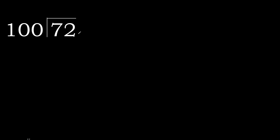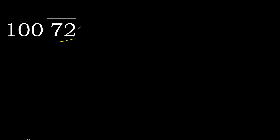72 divided by 100. 7 is less, therefore next. 72 is less, therefore next. There is no number, therefore complete — always complete with 0 here: 0 point.